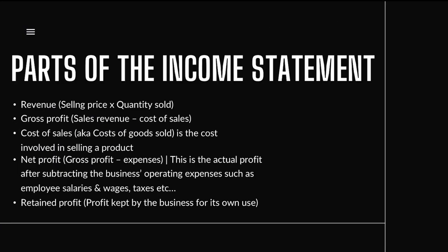The parts of the income statement are as follows. First is revenue, calculated by doing the selling price multiplied by the quantity sold. Then gross profit is the sales revenue minus the cost of sales. Cost of sales — also known as cost of goods sold — is the cost involved in selling a product and includes the opening inventory, purchases, carriage on raw materials (carriage inwards), closing inventory, and purchase returns.